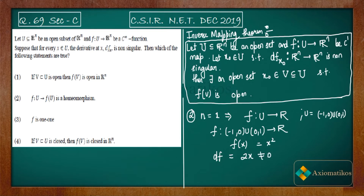Differentiating f(x) = x² gives Df(x) = 2x, which is non-zero for all x in the domain (-1, 0) ∪ (0, 1) — zero is not in the domain, so Df(x) is non-zero everywhere. This is the meaning of non-singular in the one-dimensional case.